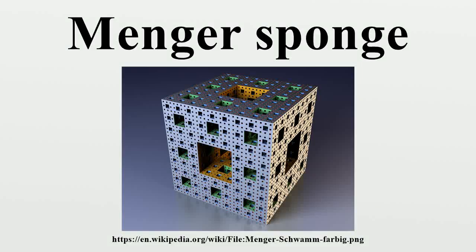In mathematics, the Menger sponge is a fractal curve. It is a three-dimensional generalization of the Cantor set and Sierpinski carpet. It was first described by Karl Menger in 1926, in his studies of the concept of topological dimension.